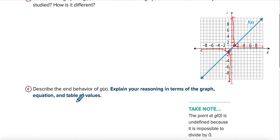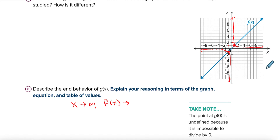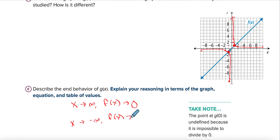Let's do end behavior. As x approaches infinity, f of x approaches what? Normally graphs go up or down, but this one is approaching zero — it's getting really close to a y value of zero. On the other side, as x approaches negative infinity, f of x approaches zero as well. It's never going to pass it or equal it, but it's approaching zero.